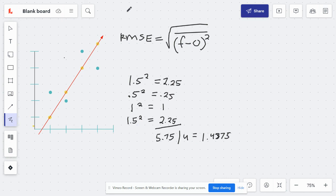Okay, so now we have the average, that's this part. We just need to take the square root of it. The square root of that is 1.199.